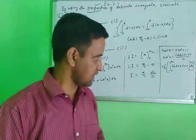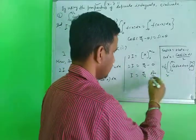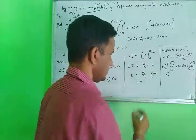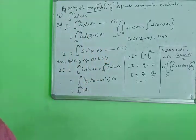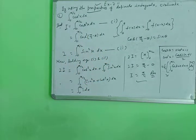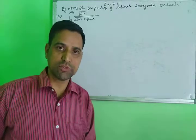So when you are using the properties, the question becomes easier to solve. Use the property and solve the answer very easily. But if the instruction says to use the property, do not solve it the other way — solve it using the property only.